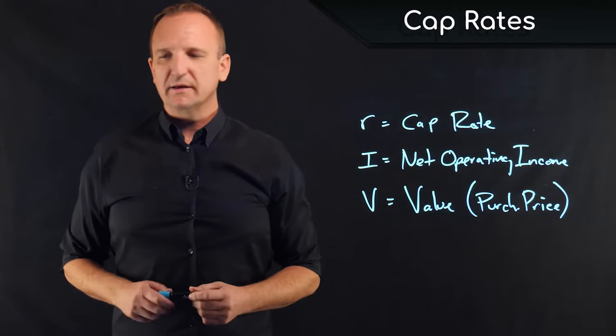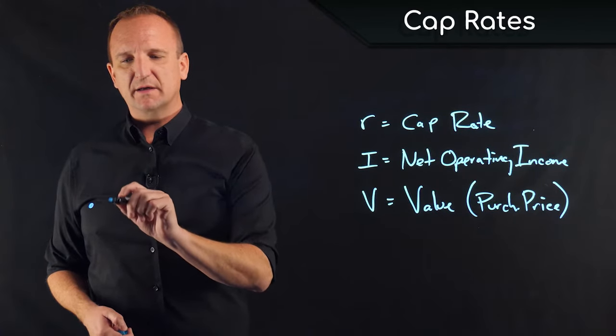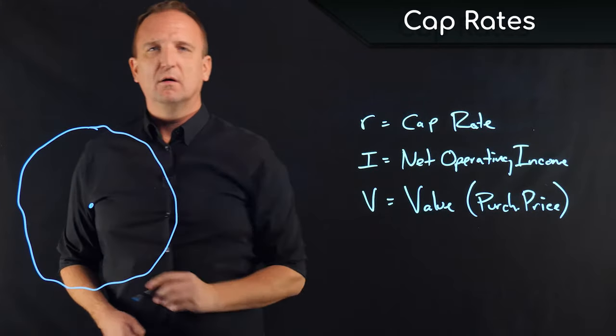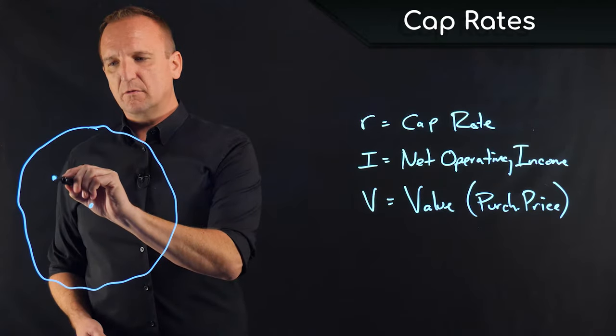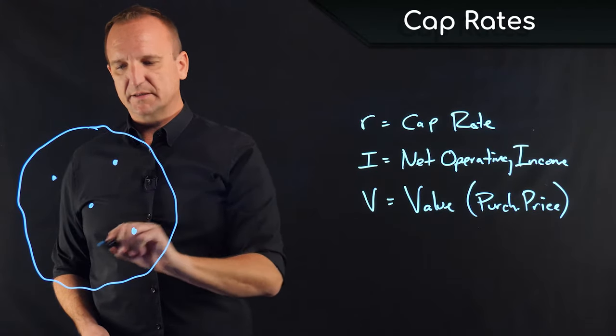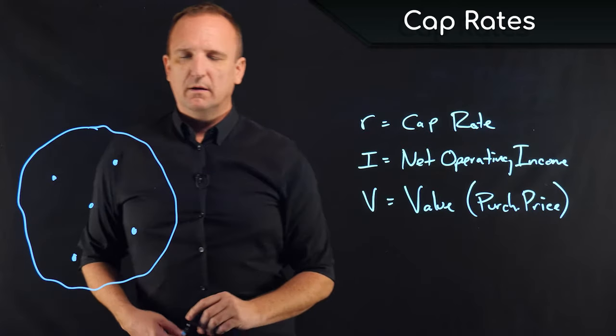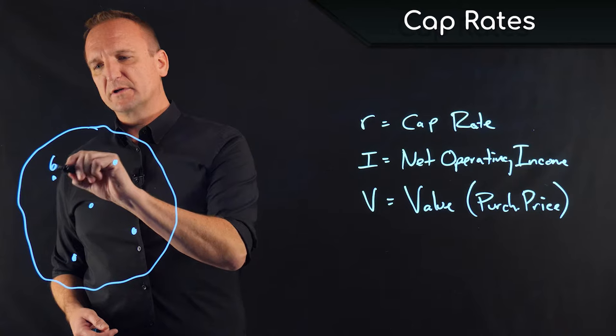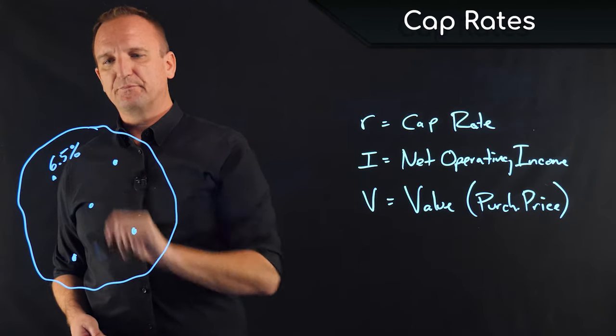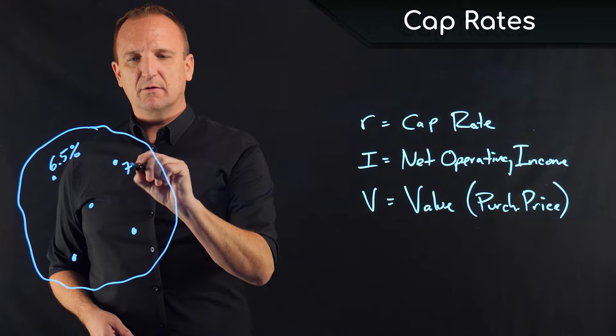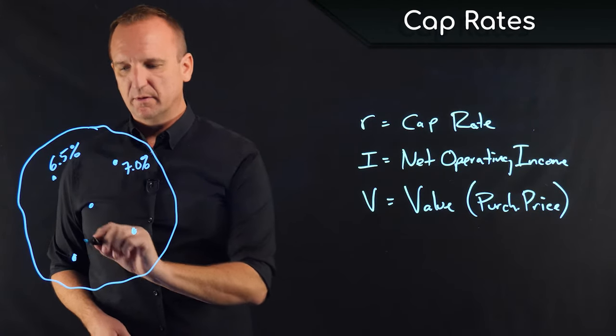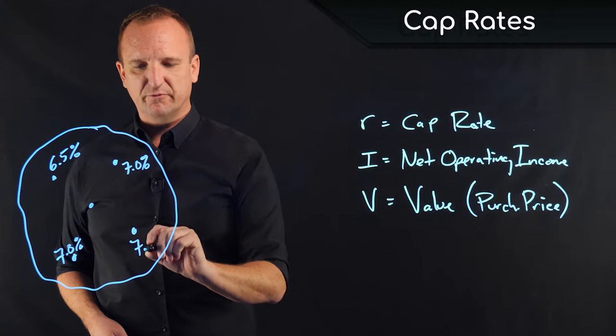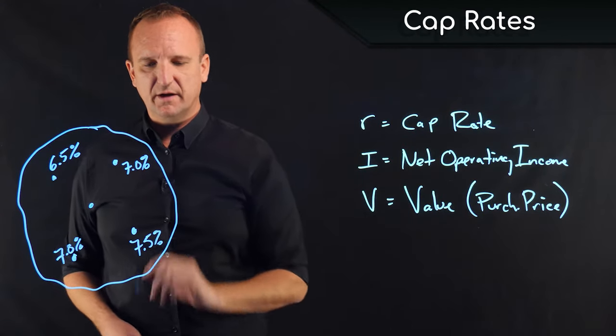Typically that goes something like this. Imagine that seller has an asset for sale, and in the same area, there are several other similar type assets that have sold recently. Let's say this one here sold for a 6.5% cap, this one here sold for a 7% cap, this one sold for a 7% cap, and this one sold for a 7.5% cap.